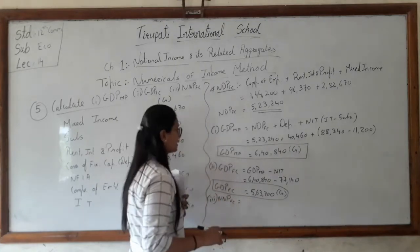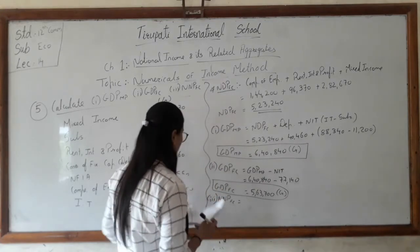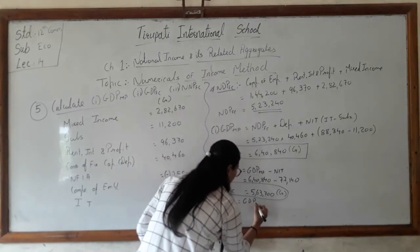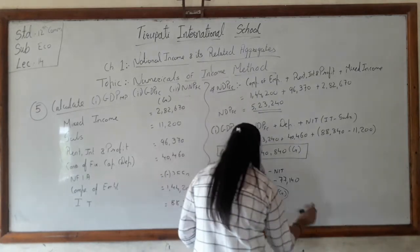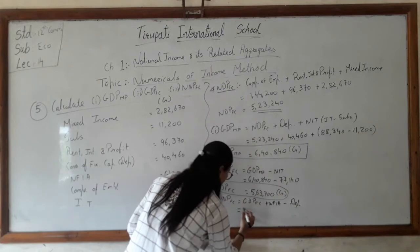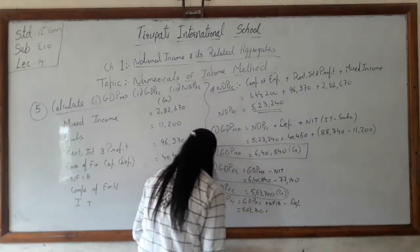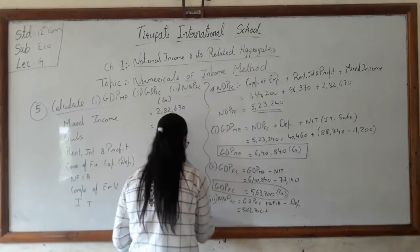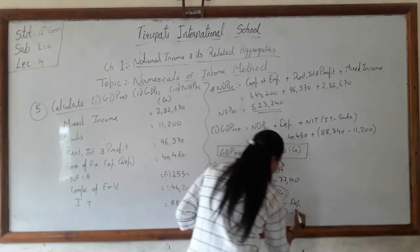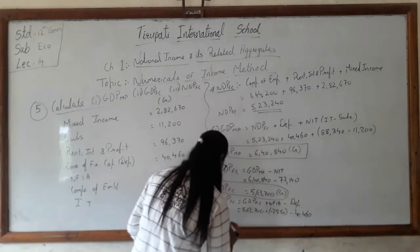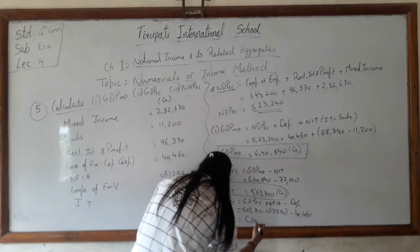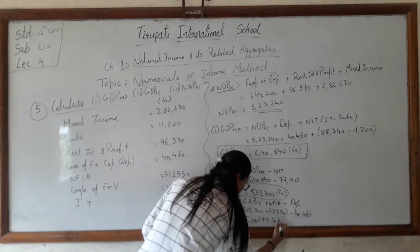Final question: NNP at FC, which is national income. We can use GDP at FC. From gross to net we subtract depreciation, and from domestic to national we add NFIA. So: NNP at FC = 5,63,700 plus (minus 2,550) minus 40,460 = 5,20,690 crores. This is our national income.